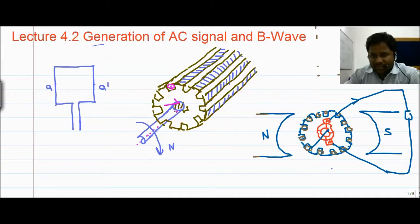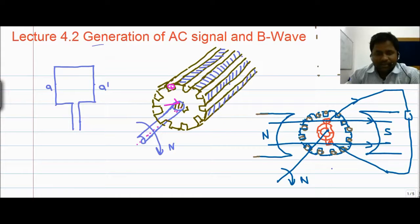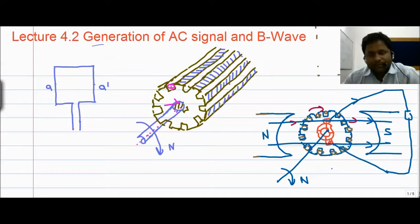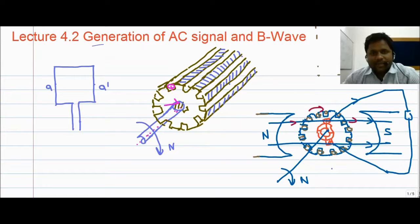Whenever this armature is rotated in a constant magnetic field, this field basically cuts the rotating conductors and the armature winding. As a result, an EMF is induced in the conductor, and with the help of slip rings or with the help of brushes we can collect the current at the outer end. In this lecture we will discuss how we can generate the AC signal when any coil is rotated in a constant magnetic field.